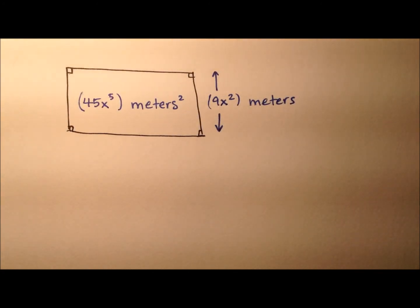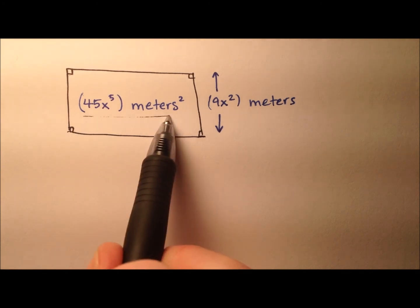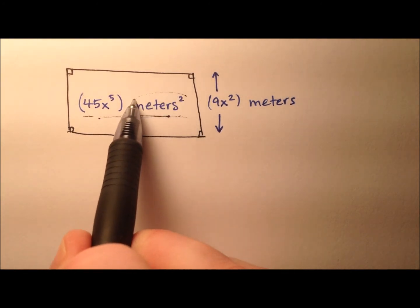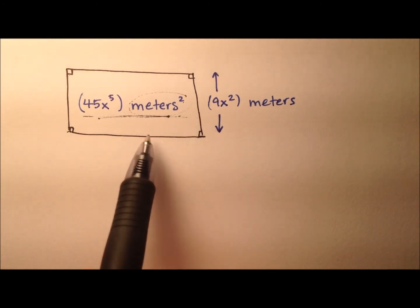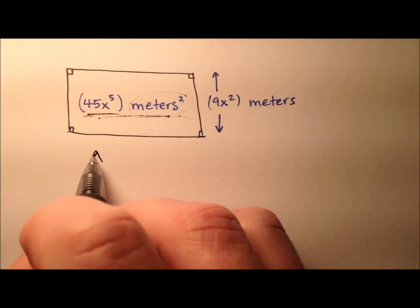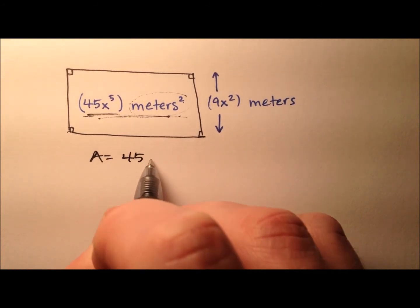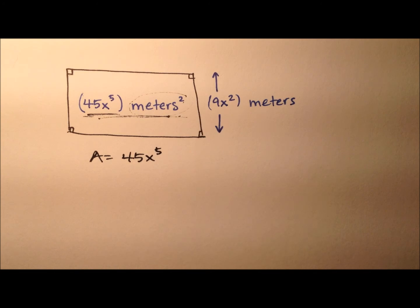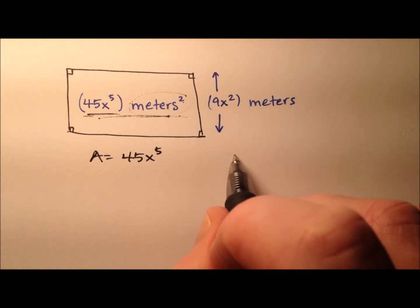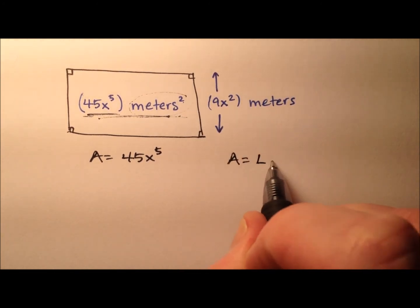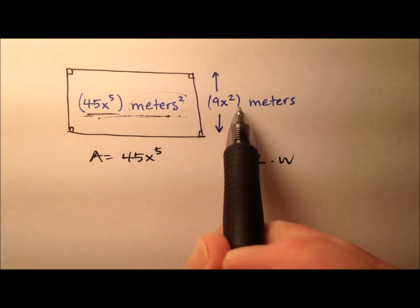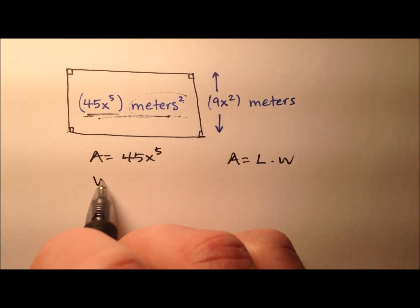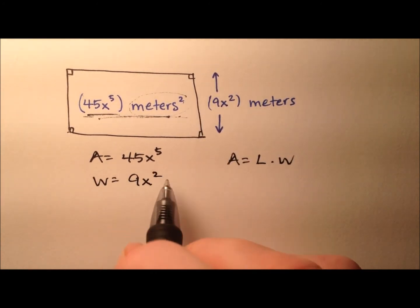In this final example, let's take a look at a geometric application of dividing monomials. We have a rectangle and we are given the area of the rectangle, and you know it's area because it's in square meters. Our area is 45x to the fifth square meters. To find the area of a rectangle, it's length times width, and the width is 9x squared.